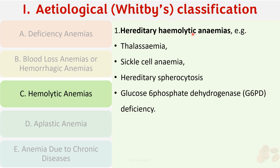Hemolytic anemias have hereditary as well as acquired causes. Hereditary causes of hemolytic anemia include thalassemia, sickle cell anemia, hereditary spherocytosis, and G6PD deficiency. All these are caused due to an inherent or genetic problem, and the baby is born with the condition, hence they are called hereditary hemolytic anemias.